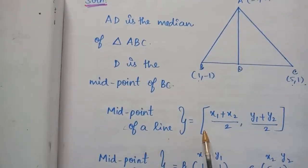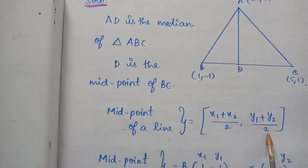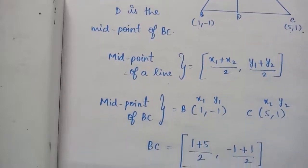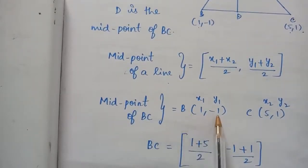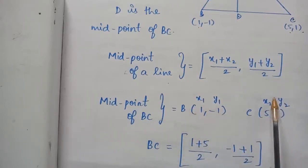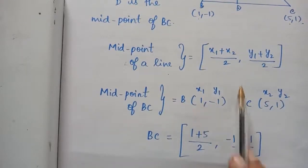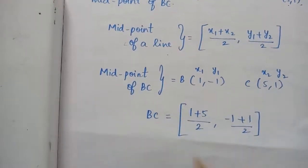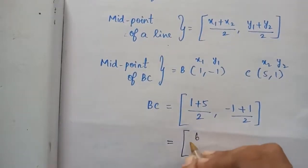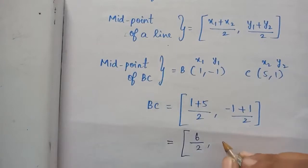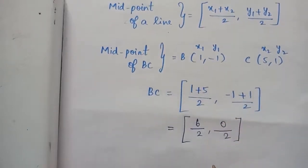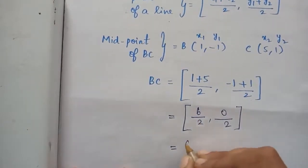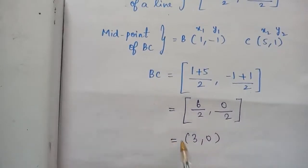Midpoint formula: ( (X1+X2)/2 , (Y1+Y2)/2 ). Midpoint of BC: B is (1,-1) and C is (5,1), so D = ( (1+5)/2 , (-1+1)/2 ) = ( 6/2 , 0/2 ) = (3, 0). The midpoint of BC is D(3, 0).